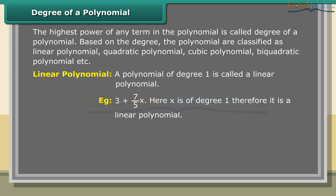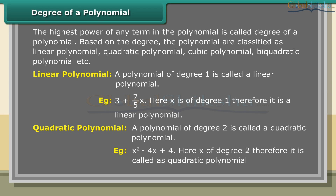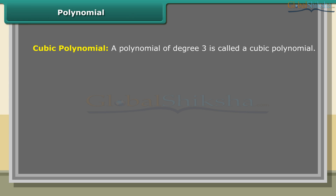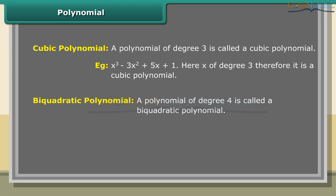A polynomial of degree 2 is called a quadratic polynomial. Example: x² − 4x + 4, where x is of degree 2. A polynomial of degree 3 is called a cubic polynomial. Example: x³ − 3x² + 5x + 1, where x is of degree 3.